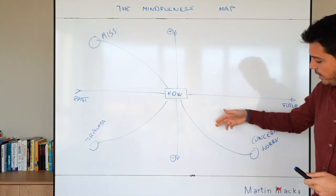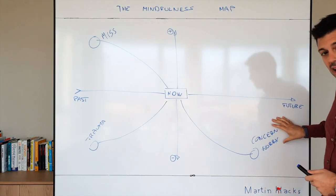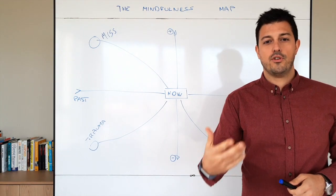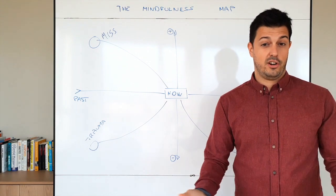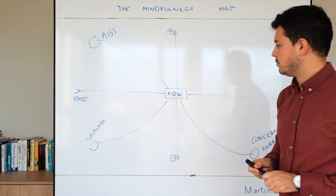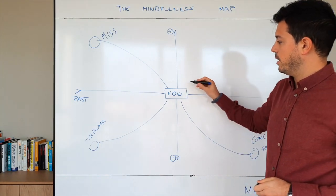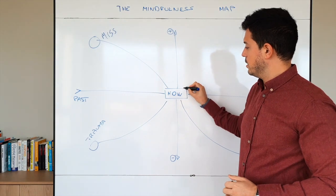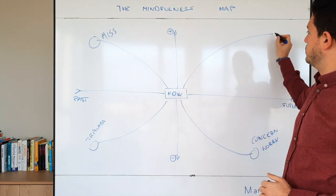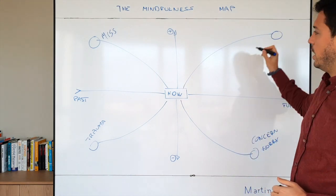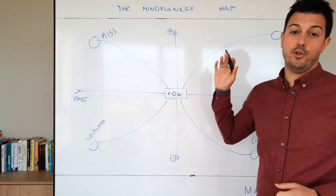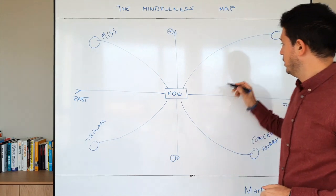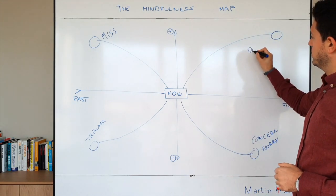People need to deal with this all the time — how to adjust to a future that is not there yet. Now the last quadrant is when we are spending a lot of time in the future with something positive, and this is daydreaming.